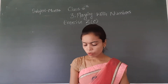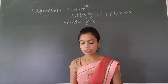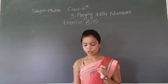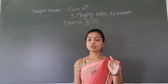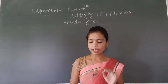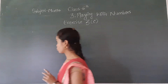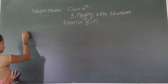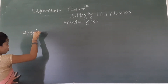Question number two dekhenge. What is your question number two? Your question number two is: write the smallest and the largest four-digit numbers. That means you have to find out the smallest and the largest four-digit numbers. So, starting from the second solution.